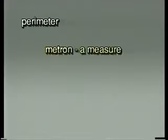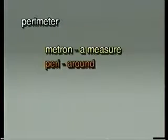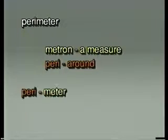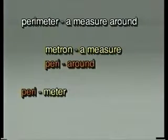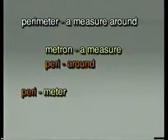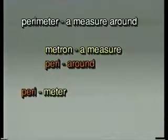Our next word is perimeter. It comes from two Greek words: "metron," meaning a measure, and "peri," a prefix meaning around. Therefore, a perimeter is a measure around. When we break up a word into its word parts for meaning, we break it into "peri" (around) and "meter" (a measure). However, when we break up this word for pronunciation, we say "perimeter" — the accent has changed.